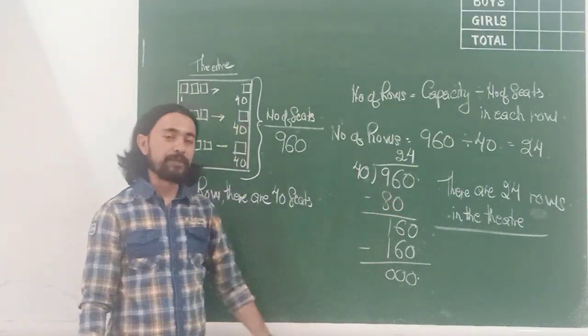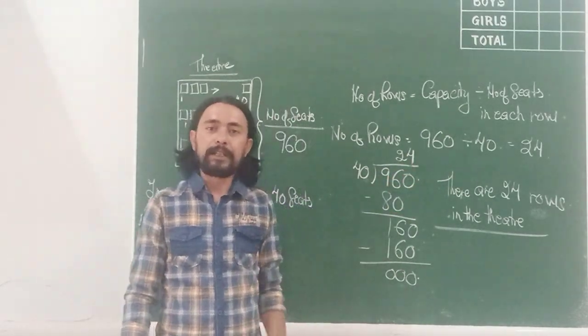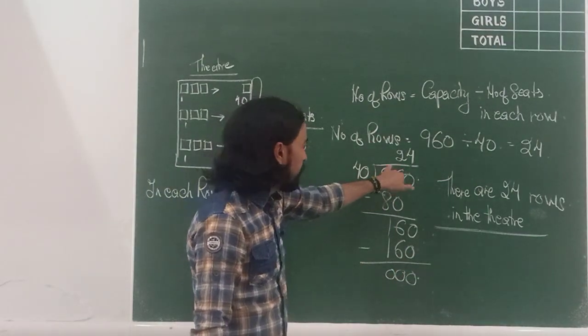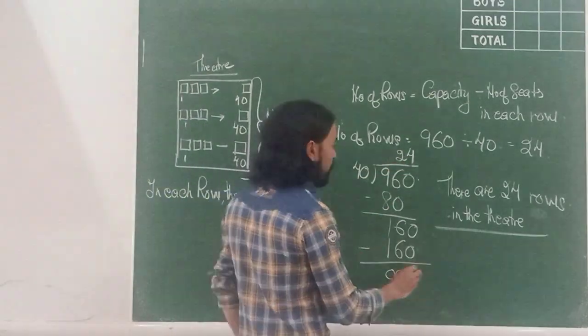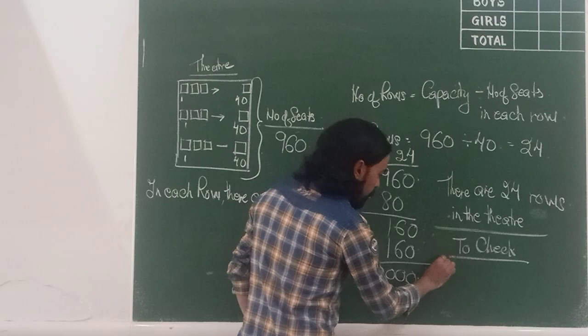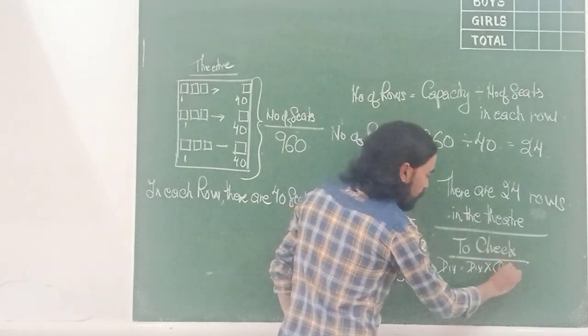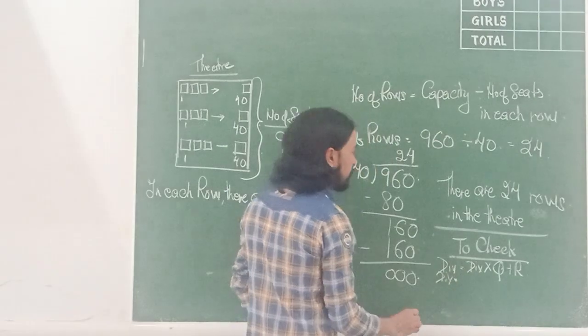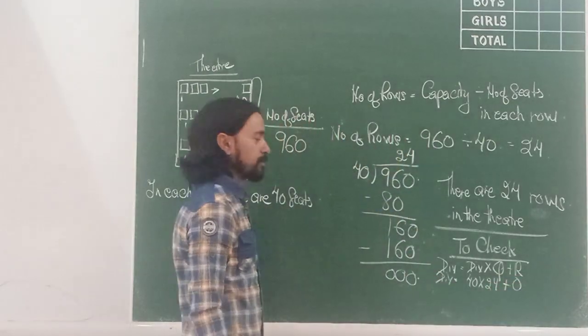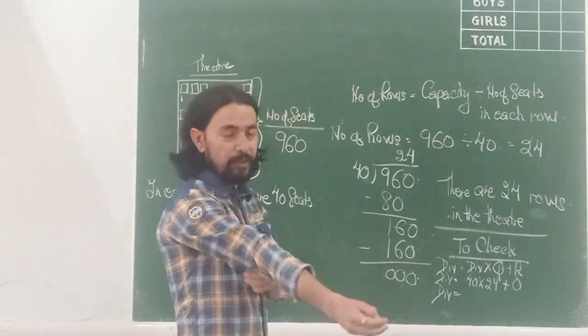Now, how do I confirm whether I have divided correctly? Again, dividend divided by quotient. Add to remainder. Now, there is no remainder to add. So, all I need to do is multiply the divisor and the quotient. So, I am just doing a rough work to check. You can also write this to check. Dividend is equal to divisor into quotient plus remainder. Dividend will be equal to divisor, 40 into 24. What is the remainder? 0. So, dividend will be equal to 40 into 24.